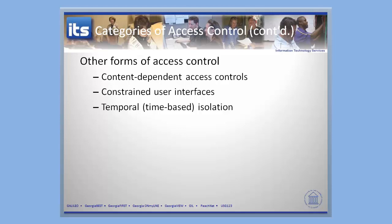This concludes our look at access controls, where we linked data classification with access controls and looked at considerations for implementing them. We're now going to start moving into security architecture models, look at some basics, and then look at some actual historical models and work through those. See you in the next video, as we talk about security architecture models.